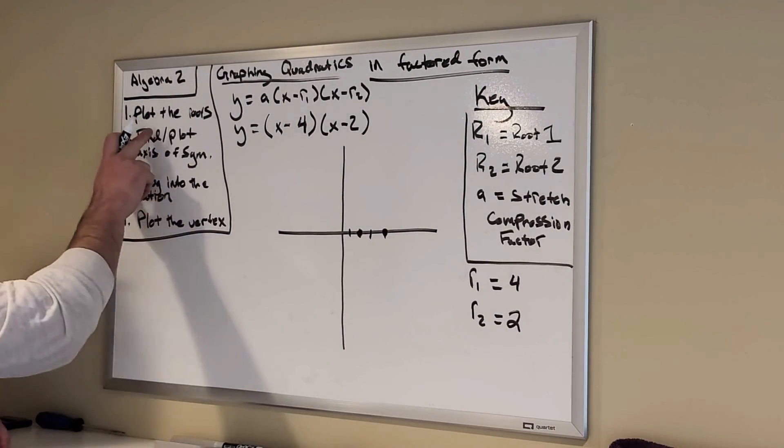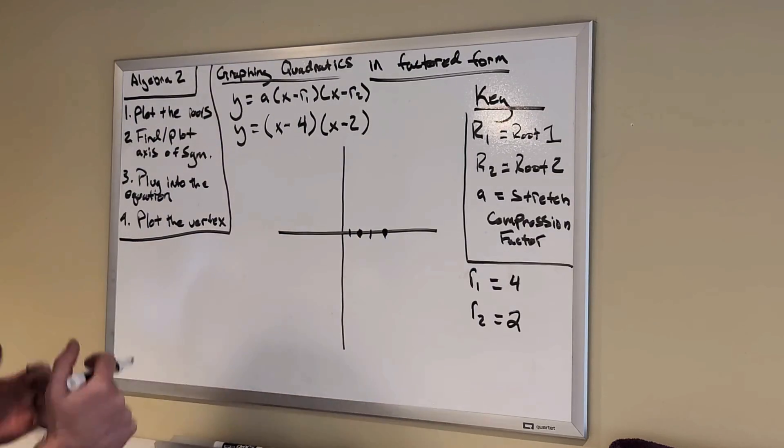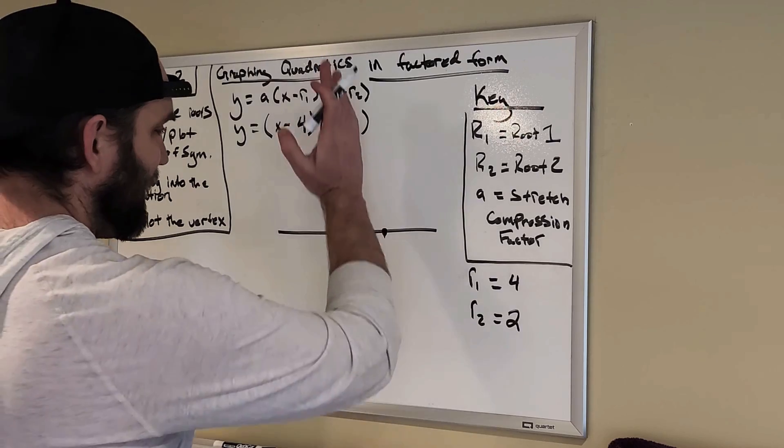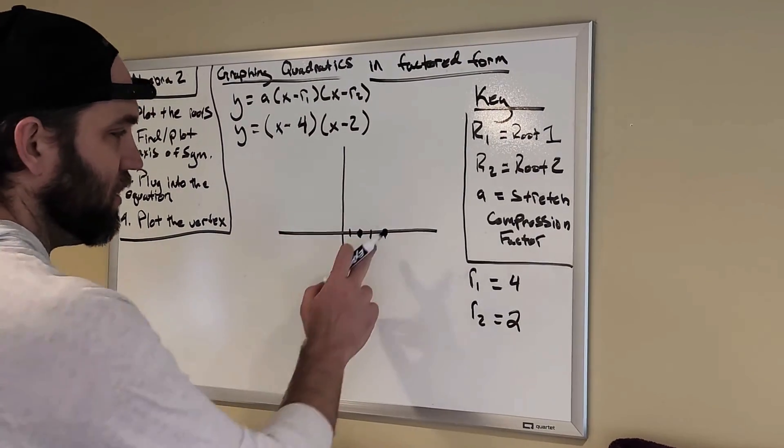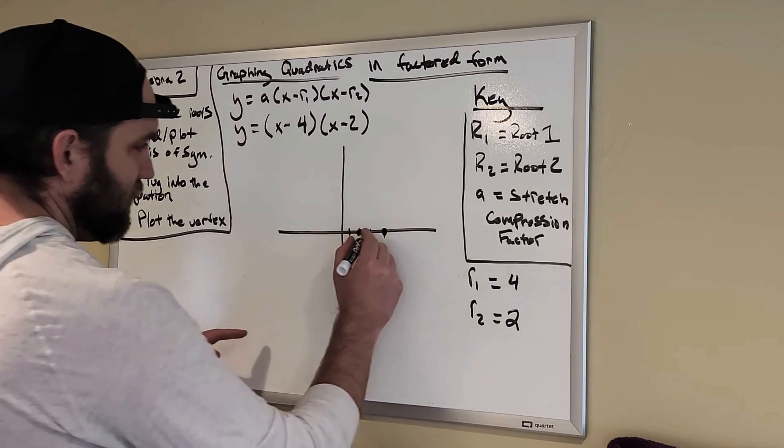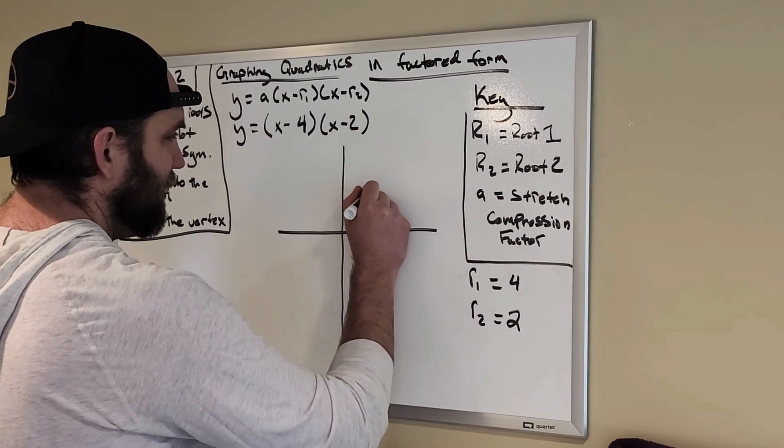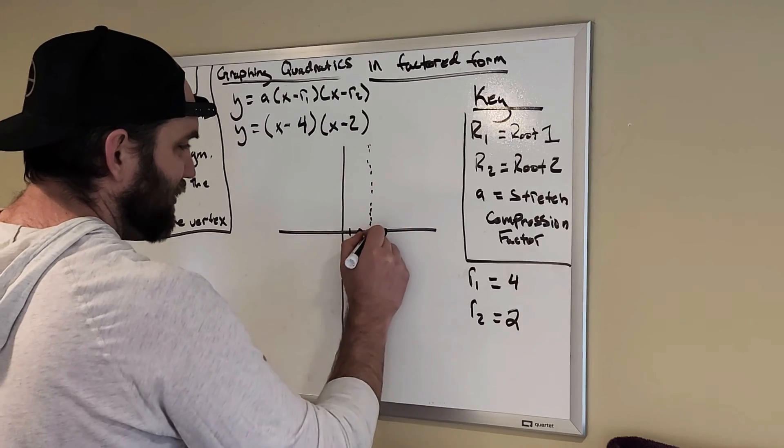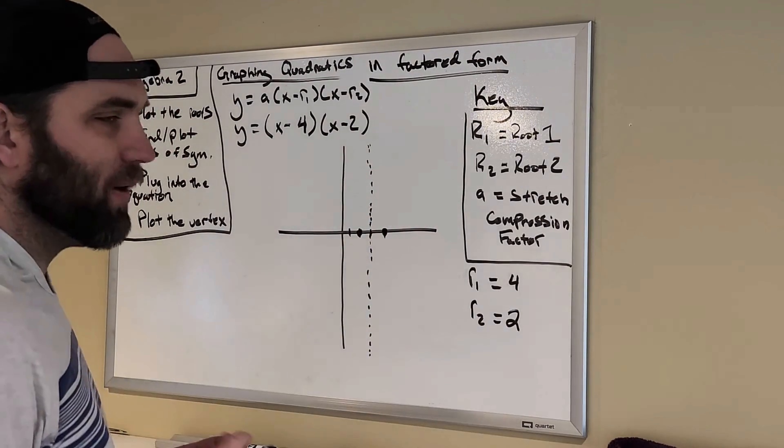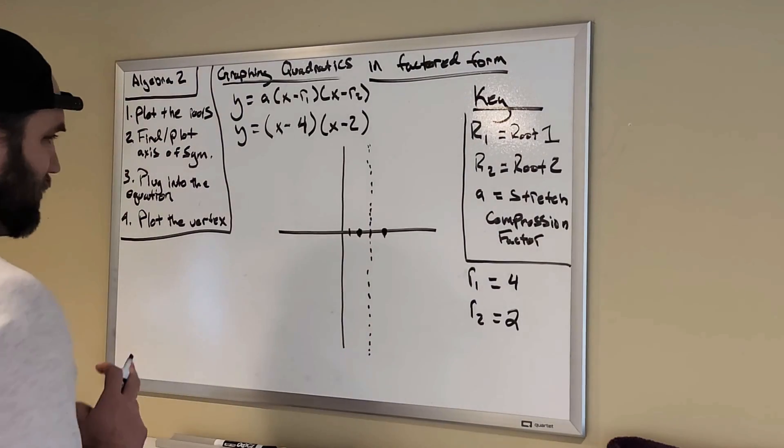Now, I look over here, my little cheat sheet, and I want to plot my axis of symmetry. And my axis of symmetry is going to be a line that goes straight up and down directly in between the two roots. So, the middle point. So, my axis of symmetry is going to be right at 3. And I just like to go all the way up and down with it. That way, I know that's where my axis of symmetry is.